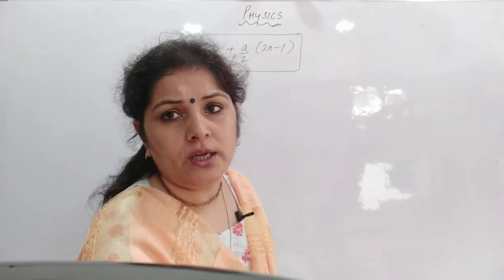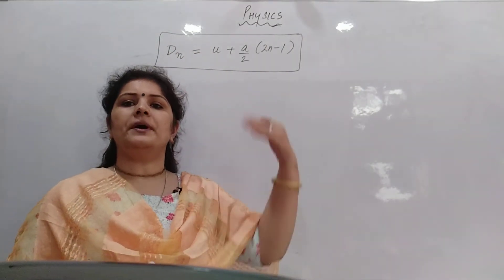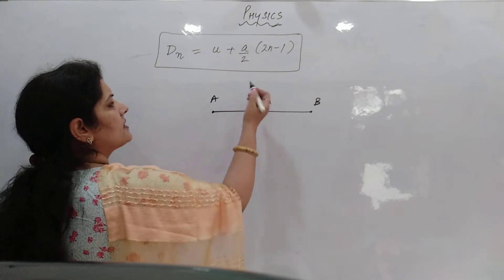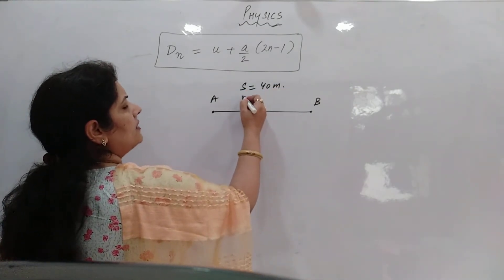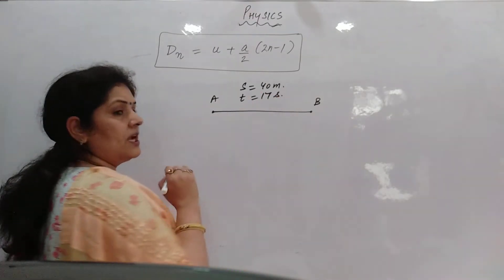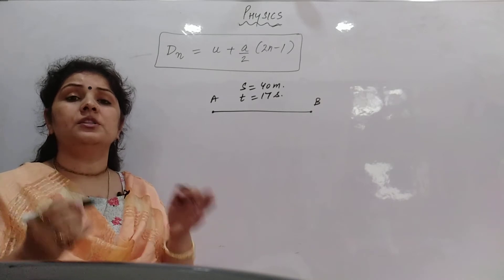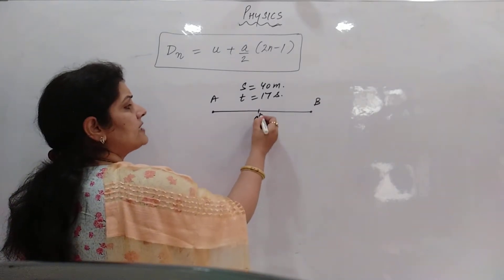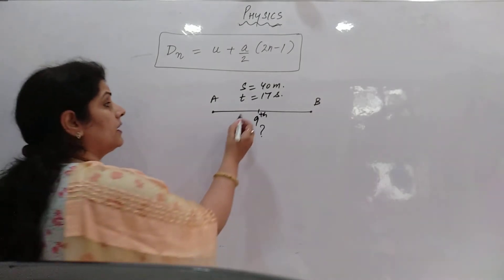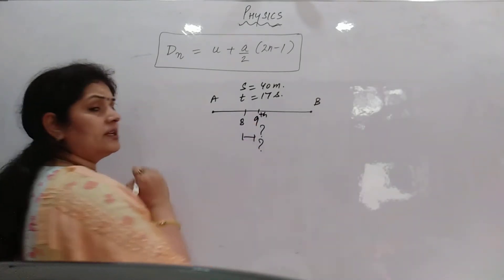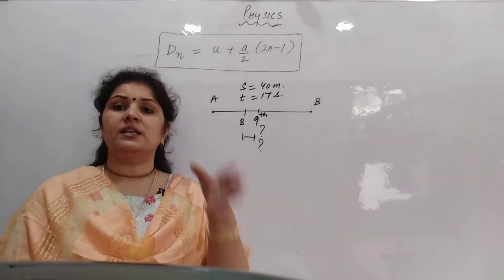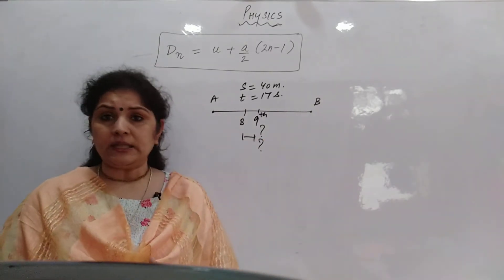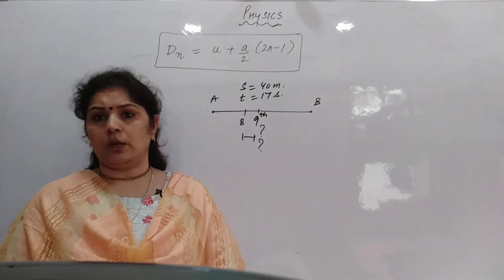Suppose there is a body which is moving from a particular point O to a particular distance. Say an object is moving from A to B and it is covering a distance of 40 meters in a time interval of 17 seconds. We want to know how much distance the body has travelled in the 9th second. The 9th second means between 8 and 9 seconds — how much distance did the body travel? The fourth equation of motion tells us the distance travelled in a particular nth second.